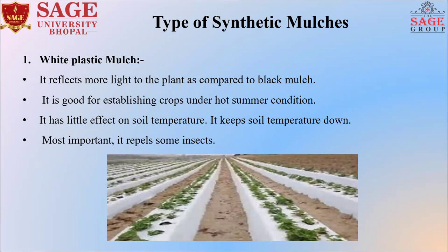Types of synthetic mulches: The first is white plastic mulch. White plastic mulch reflects more light to the plant as compared to black mulch. It is good for establishing crops under hot summer conditions. White plastic mulch has little effect on soil temperature and keeps soil temperature down. It also repels some insects.